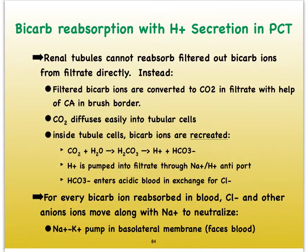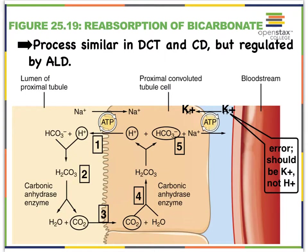For every bicarbonate ion that's reabsorbed into our bloodstream, we're going to exchange that for chloride and other negatively charged ions. We're looking here at the proximal convoluted tubule, despite the fact that most secretion actually occurs in the distal convoluted tubules and even to some extent the collecting ducts. Bear in mind that in the distal convoluted tubule and collecting duct, we are going to need the help of a hormone — particularly aldosterone — with the reabsorption of bicarbonate ions, because these ions are going to tag along with sodium.